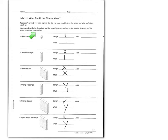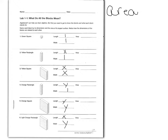Notice how the dimensions of the blocks are related to each other. We're going to start with the little green square. We are going to say it has a side length of 1 centimeter and a width of 1 centimeter. Area equals length times width, so 1 times 1 is simply 1. So our green squares we are going to call 1s from now on — they represent the number 1.